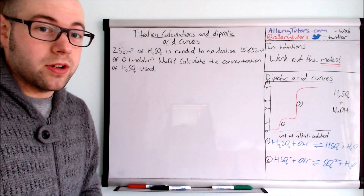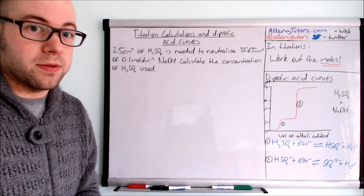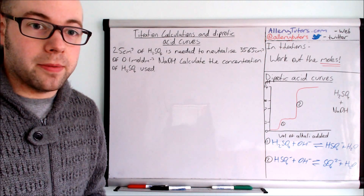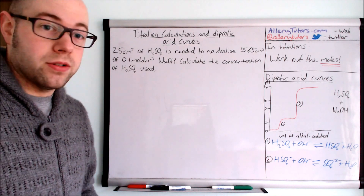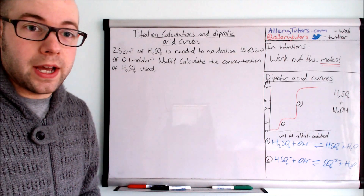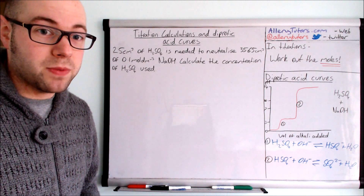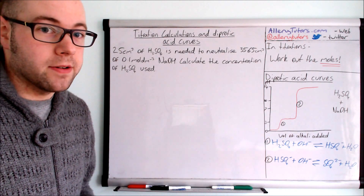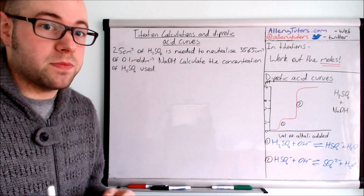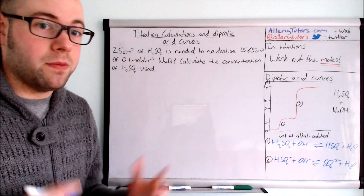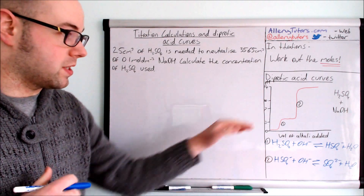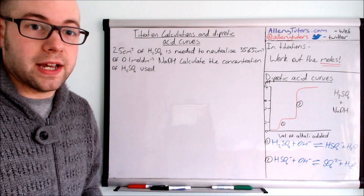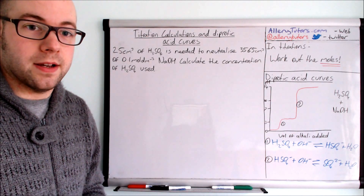This doesn't just apply to H₂SO₄ — you can do it with weak acids too. For example, dicarboxylic acids. It could also work for dibasic compounds that are soluble — ones with two OH⁻ groups. It works in a very similar way. Just be prepared to explain why we have this double endpoint and this unique shape for diprotic acid curves.